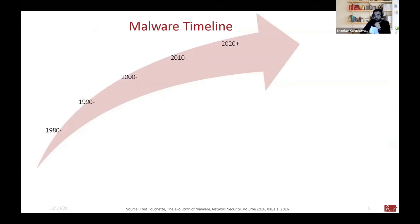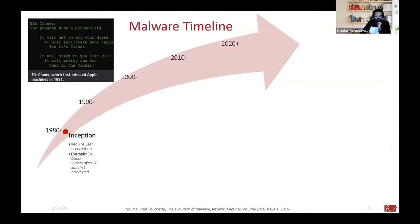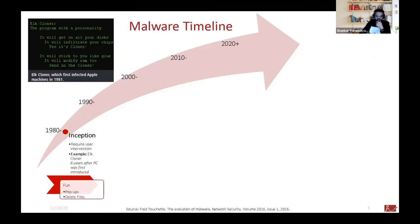Let's understand how malware evolved over time. Its inception started in the 1980s, where you see the malware called Elk Cloner, which first infected Apple machines in 1981. Malware in the early 80s required user intervention — you had to install it and execute it yourself. The motivation back then was just fun. It would show a dialog box with a poem, could delete files, but still required user intervention.